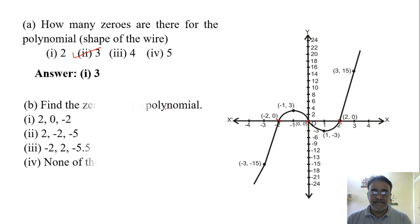Now let us move toward the second question. Find the zeros of the polynomial. How many zeros means at how many places the curve intersects the x-axis. But find the zeros means we have to write the value where the curve intersects the x-axis. So it intersects at 2, 0, and minus 2. So 2, 0, minus 2 is the correct answer, the first option.